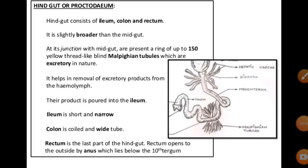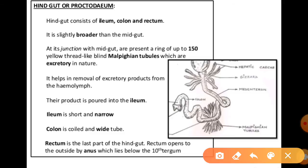The hindgut, also called the proctodaeum, is broader than the midgut and is divisible into the ileum, colon, and rectum. The ileum is shorter and narrow bearing short spines. About 100 to 150 fine yellow-colored thread-like filaments known as Malpighian tubules are found there, joined to the ileum.